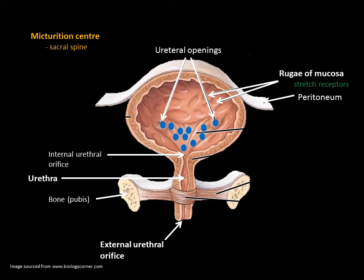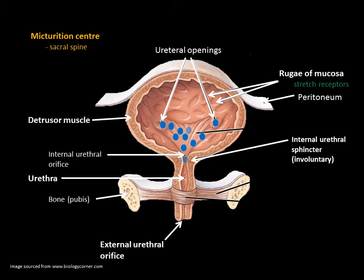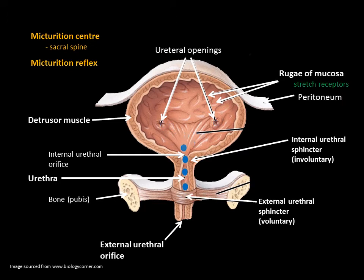This creates the involuntary contraction of the detrusor muscle and relaxation of the internal sphincter muscle — this is called the micturition reflex. Upon the conscious decision to go to the bathroom, the voluntary relaxation of the external sphincter causes urination.